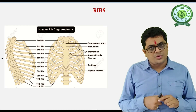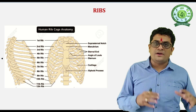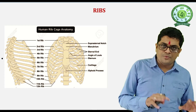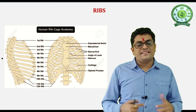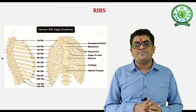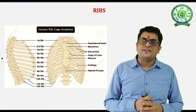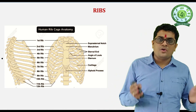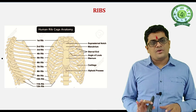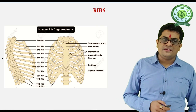The first 7 ribs are the true ribs. Ribs 8, 9, and 10 are the false ribs because they are only attached to the vertebral column posteriorly; anteriorly they connect to the 7th rib, not directly to the sternum. The 11th and 12th ribs are the floating ribs because they are only attached to the dorsal side of the vertebral column and not anteriorly — that is why they are called floating ribs.